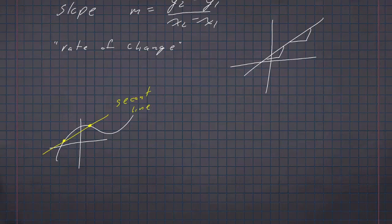Just pick two points on the curve and draw the line through those two points. The average rate of change of the function is the slope of the secant line.